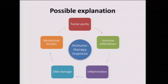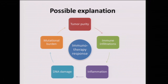Why is mutational burden so highly correlated with tumor purity? I think there is some kind of cycle we don't fully understand: tumor purity is a proxy for immune infiltration, where the major part of the non-pure component is immune cells, which could be a proxy for inflammation, which we know can drive DNA damage — correlated with mutational burden. I think all of them together are the reason we see this effect on immunotherapy response. We shouldn't limit ourselves to studying only mutational burden; we need to look at this entire cycle.